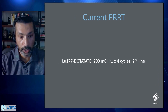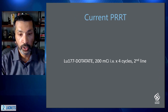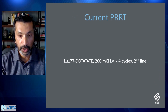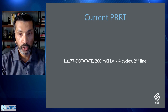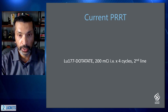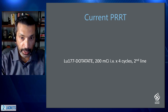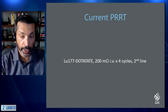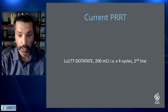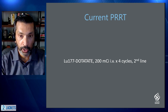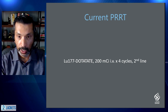The complete therapy is typically done as four cycles of 200 millicuries given every two months, and can be given in addition to long-acting octreotide, which is primarily used for symptom control. As long as the labs are sufficient throughout this time, we can complete all four cycles of treatment.